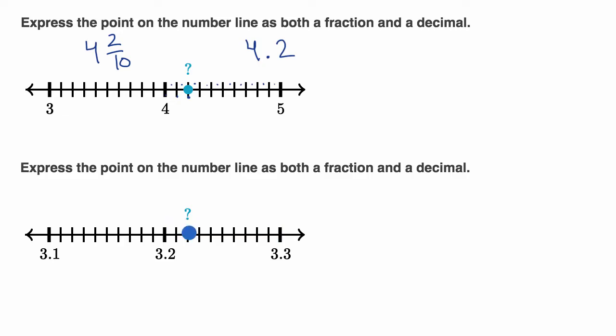So each of these hash marks, which are a tenth of a tenth, would actually be a hundredth. So one way to think about it, you could view 3.2, or three and two tenths, as three and 20 hundredths. And you could view three and three tenths as three and 30 hundredths.